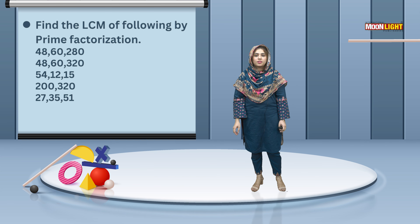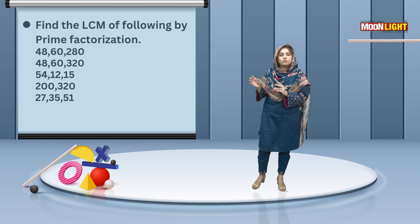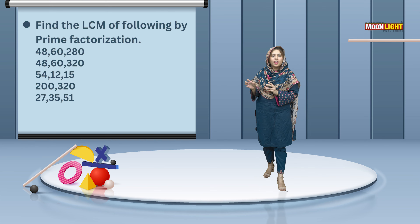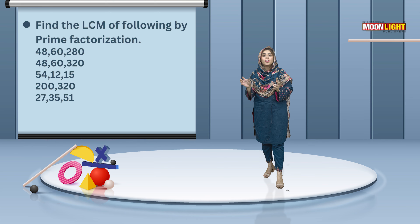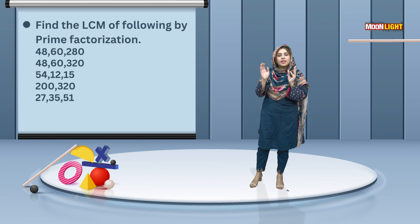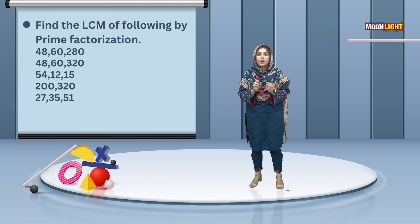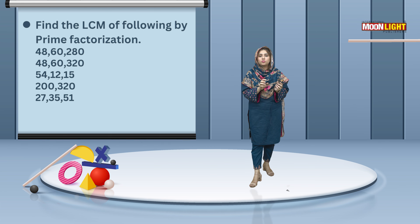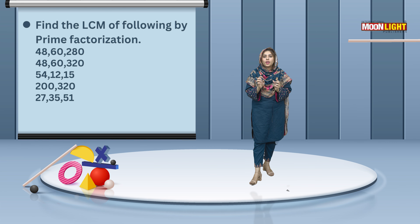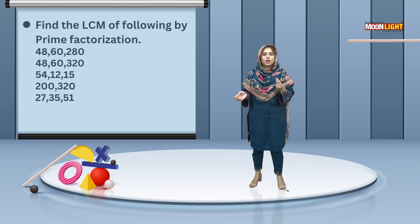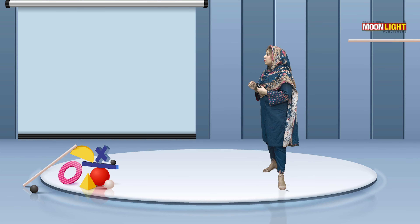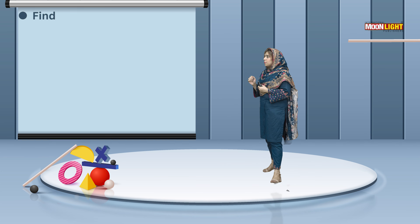You have to find the answers to these questions by prime factorization. You all know what we do in prime factorization: we take a number, make its factors, write them in index notation, and after writing the highest index notation, we multiply them to get the answer.